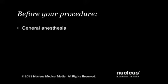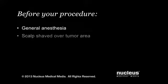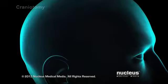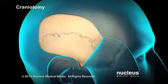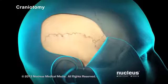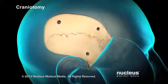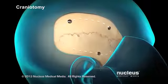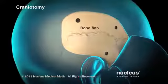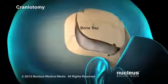Before your procedure, you will be given general anesthesia to make you unconscious and pain-free. The skin on your scalp will be shaved over the location of the tumor. To begin, your surgeon will make an incision in your scalp. One or more small holes will be made in your skull. Then your surgeon will connect the holes to create a circular piece of bone called a bone flap and remove it.